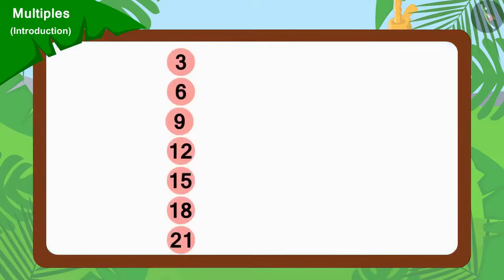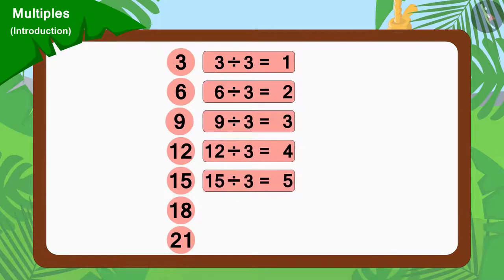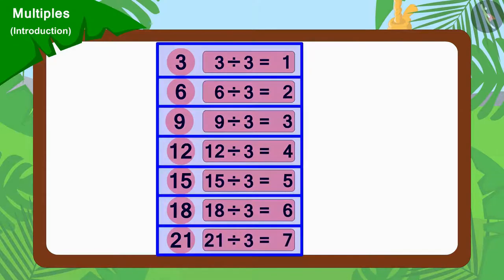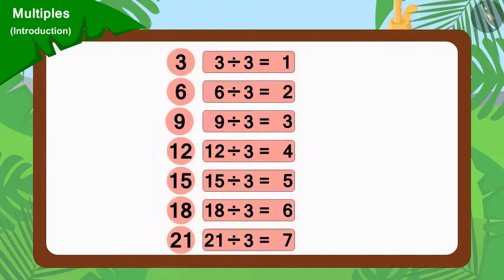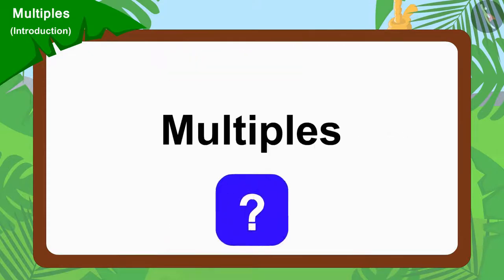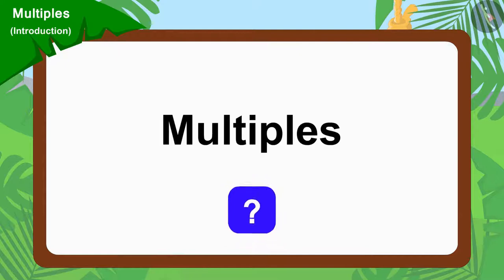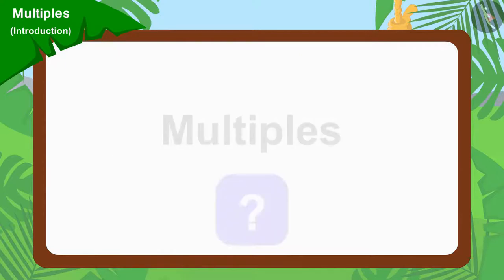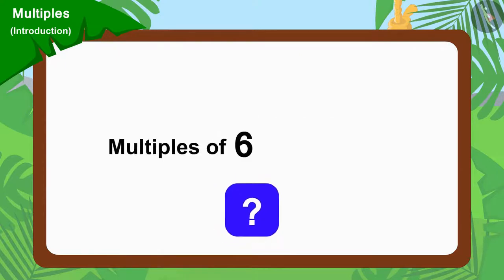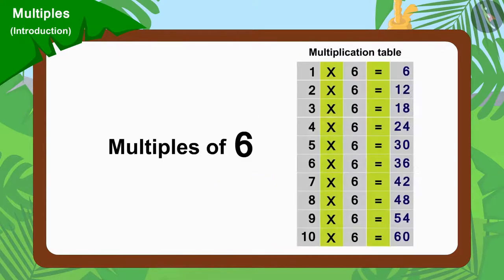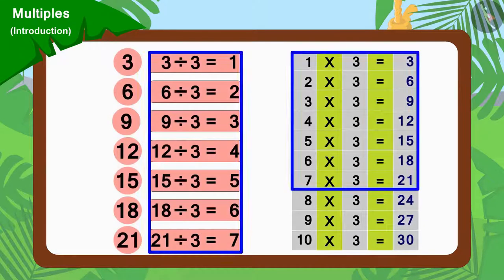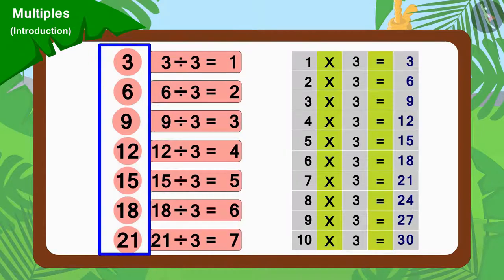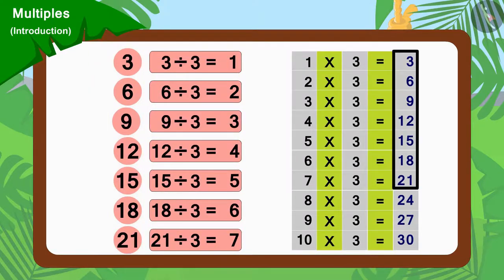Because all these numbers can be divided by 3, these numbers are multiples of 3. Do you know another interesting thing about multiples? We can find the multiples of any number from its multiplication table. For example, if you look closely, you will find all these numbers in the multiplication table of 3.